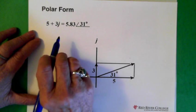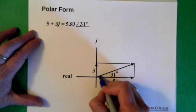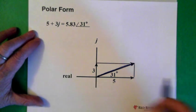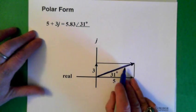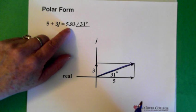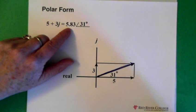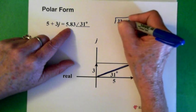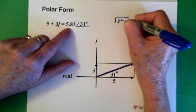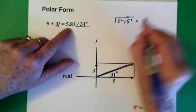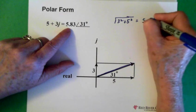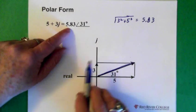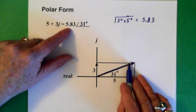If we want it in polar form, we solve for the hypotenuse here. And the hypotenuse is the 5.83. And of course, we'd use Pythagoras for that. So, the square root of 3 squared plus 5 squared equals the 5.83. So, that's the hypotenuse, the 5.83.